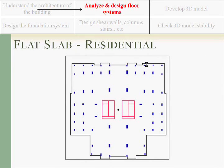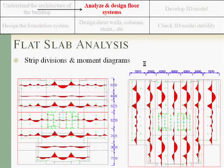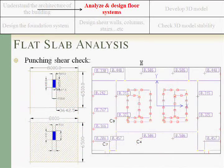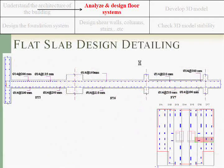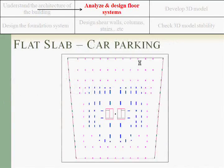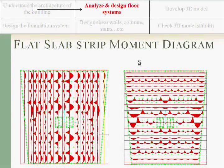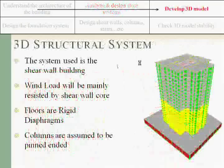The next slab system is the flat slab residential system. You can see the strips we divided to design the flat slab. Due to the irregular shape we used SAFE to analyze the strips. For punching shear checks we identified the critical points and checked them manually to verify the slab's adequacy. The basement flat slab was also designed as strips for positive and negative moments.